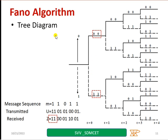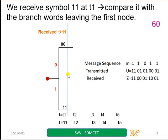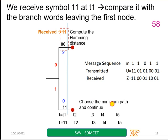Now this is a tree diagram. Received is 11. I will compare 11 with this branch and this branch. Start from the origin. We have received 11. On this branch, I have 00. Now, I have 11. Let us find the Hamming distance. Hamming distance between 11 and 00 is 2. Between 11 and 11 is 0. Which one I have to choose? Choose the minimum path. And follow this now. Continue the same procedure.